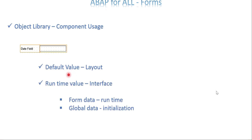If you want to pass a default value, you have a few options. In the layout itself under the object palette, you can pass a default value. If you want the value at runtime, you can pass it at the interface level — either through form data from a driver program, or in the global data where there is also a default value option. There are a lot of options available to pass a value to the variable.